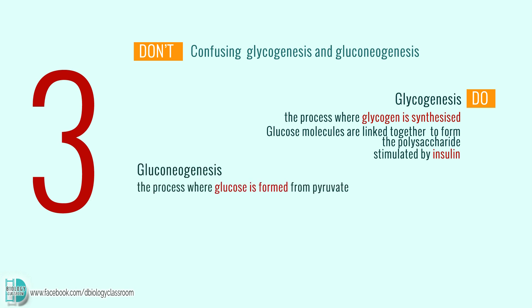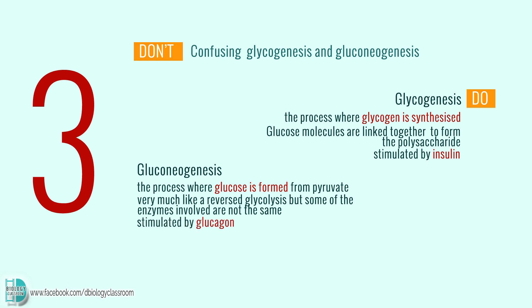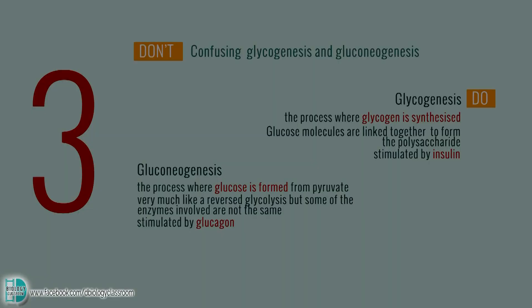Gluconeogenesis is the process where glucose is formed from pyruvate. It is very much like a reverse glycolysis, but some of the enzymes involved are not the same. It is stimulated by glucagon.